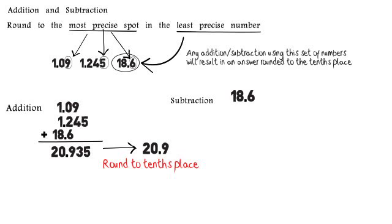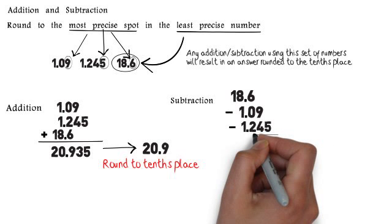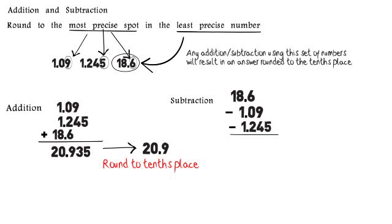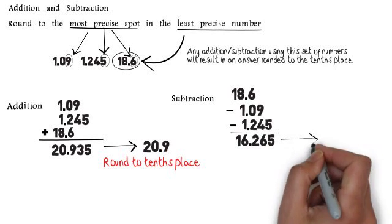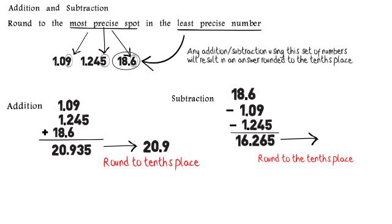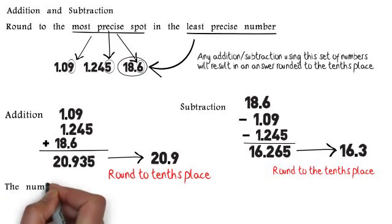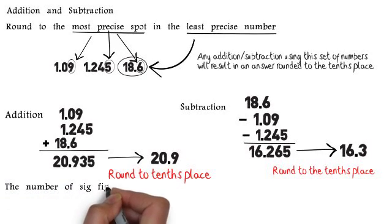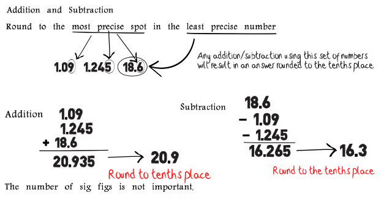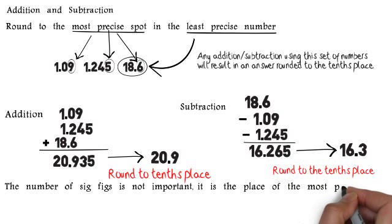For subtraction, 18.6 minus 1.09 minus 1.245 gives us 16.265, which rounds to 16.3 when rounded to the tenths place. Again, you're rounding to the most precise spot in the least precise number — which for these numbers is where the 6 is, the tenths place. It is not the number of significant figures that is important.